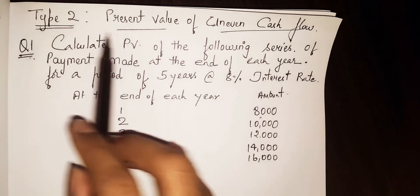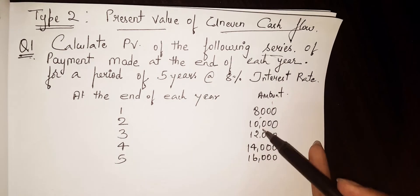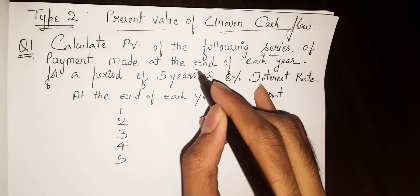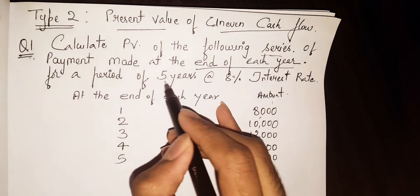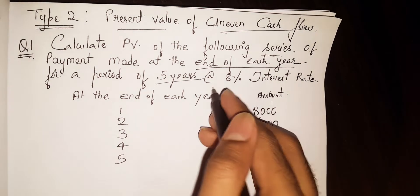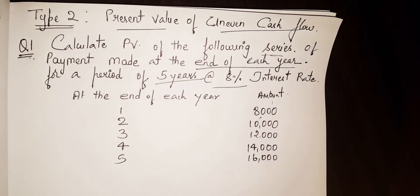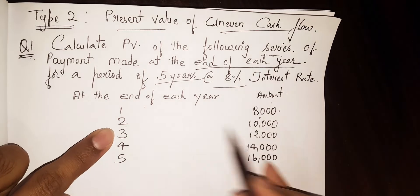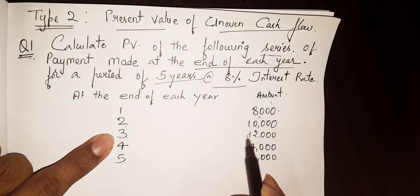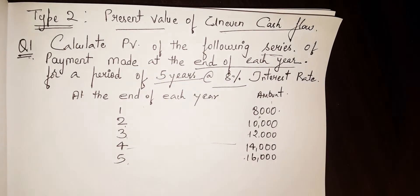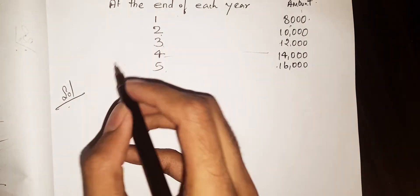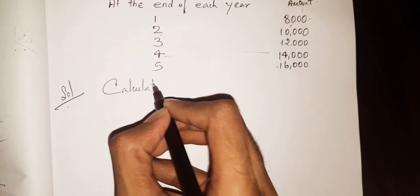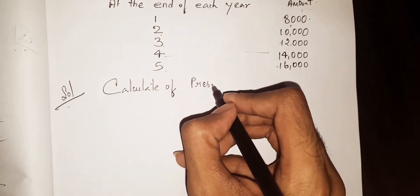Calculate the present value of the following series of payments made at the end of each year for a period of 5 years at 8% interest rate. First year: 8,000; second year: 10,000; third year: 12,000; fourth year: 14,000; fifth year: 16,000. With this information, let us calculate the present value.